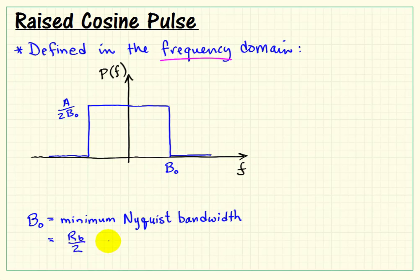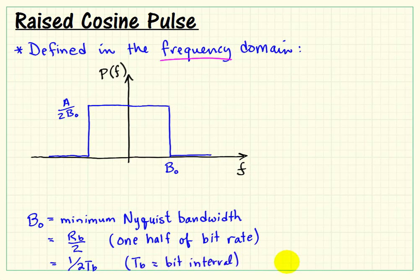Now, the minimum Nyquist bandwidth is also the same thing as one half of the signal bit rate, and bit rate, which is Rᵦ, would be the same thing as the reciprocal of the bit interval.